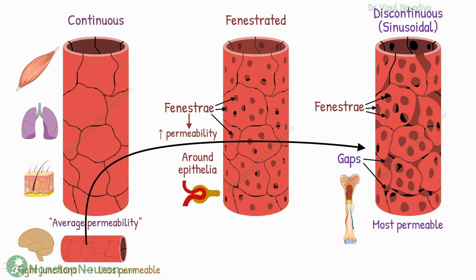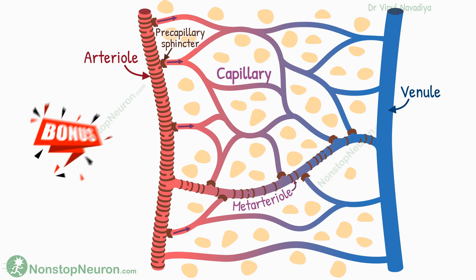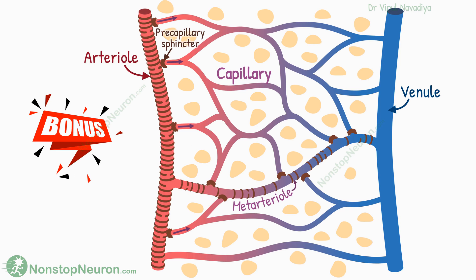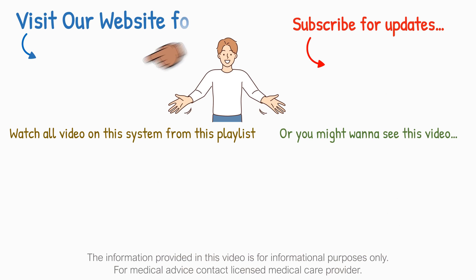That's all for the structure of the microcirculation and capillary system. For watching the video until the end, I have some interesting facts for you. In the body, we have about 10 billion total capillaries — it's a huge number. We literally have capillaries everywhere in the body. Hardly any functional cell is more than 30 micrometers away from a capillary. Thanks for watching. See you in the next video.